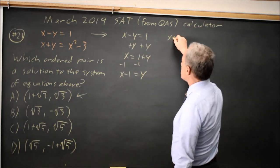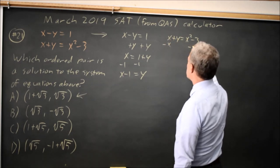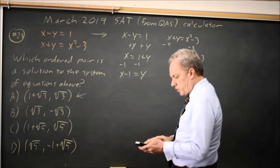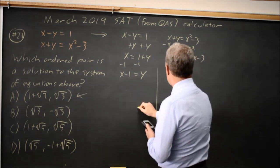In my other equation, x plus y equals x squared minus 3, subtract x from both sides, y equals x squared minus x minus 3. I'll graph that in y2. And when I hit graph, I get something that looks like this.